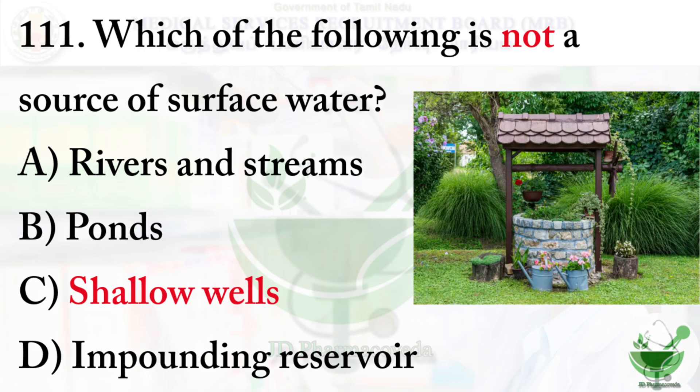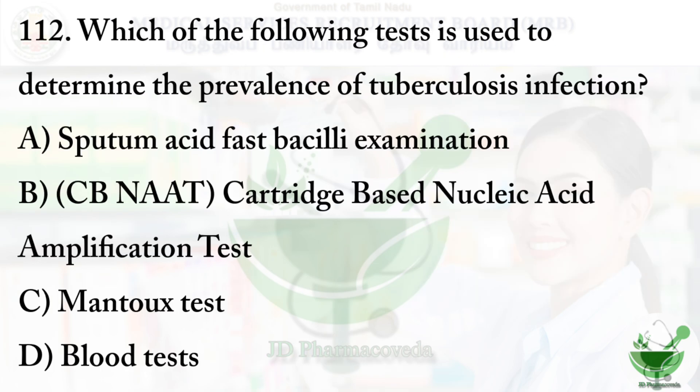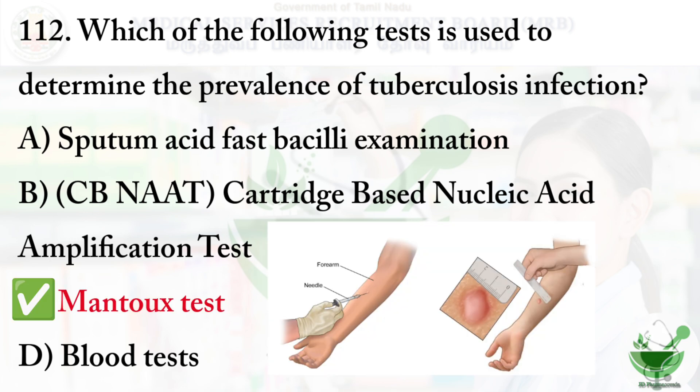Question 112: Which of the following test is used to determine the prevalence of tuberculosis infection? Option A: sputum acid fast bacillus examination. Option B: cartridge based nucleic acid amplification test. Option C: Mantoux test. Option D: blood test. The right option is option C, Mantoux test.